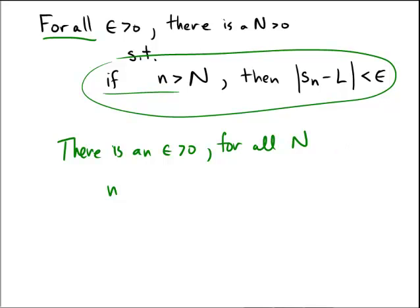Well, that would mean that we would have to have the antecedent be true, so for all n, there is a case where n is bigger than capital N, and simultaneously, we have |S_n minus L| being bigger than or equal to epsilon. And all we have to do is find an epsilon that makes this the case.